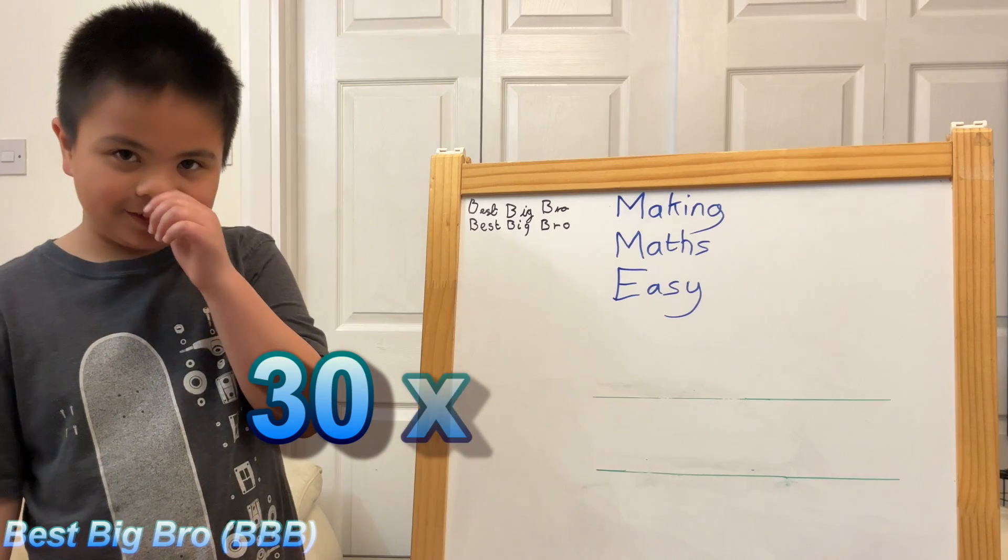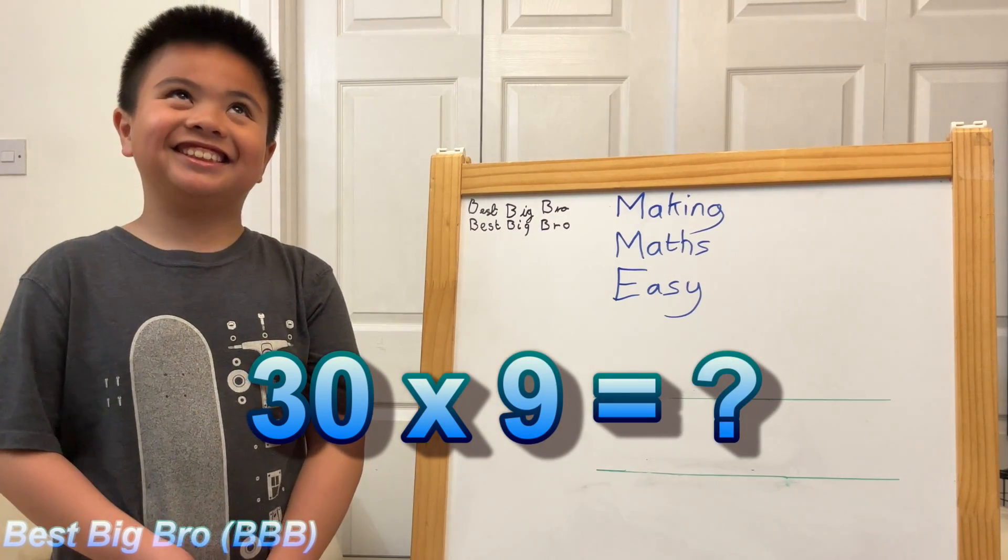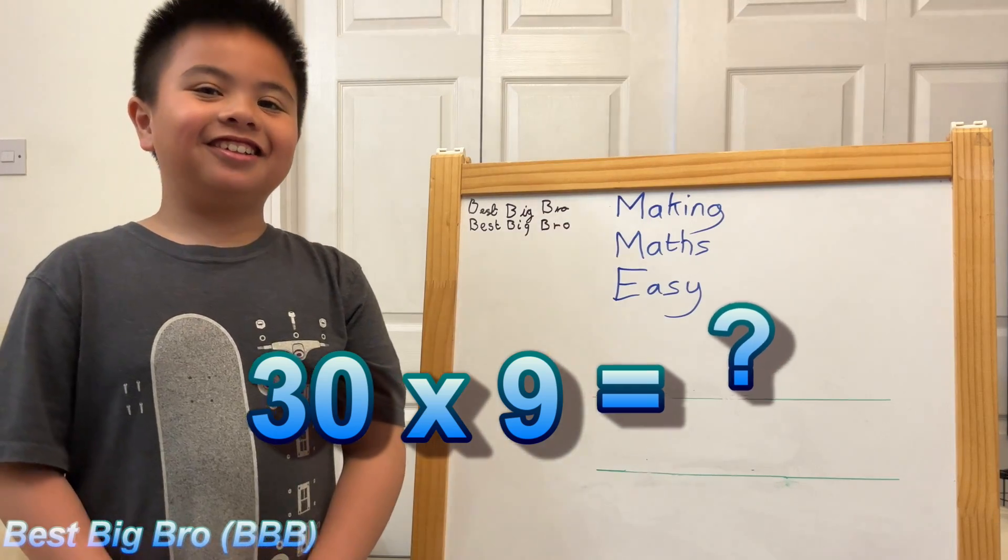What's 30 times 9? Oh, it's 30 times 10. 270.